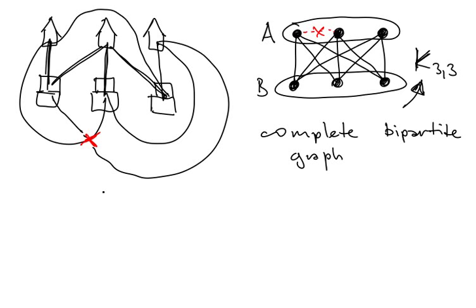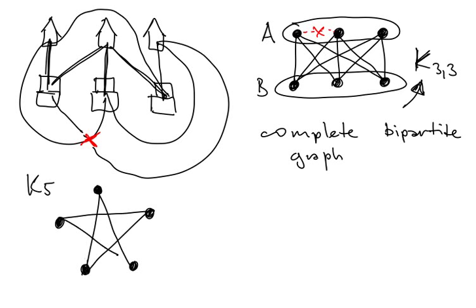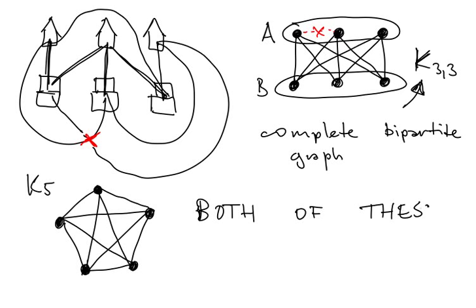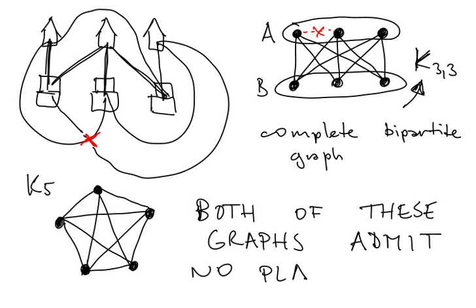Another classical example of a graph that admits no planar drawing is K5, the complete graph on five vertices. We have five vertices each connected to every other vertex, and this graph also admits no planar drawing.